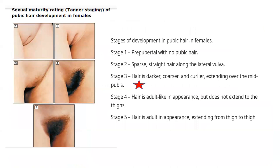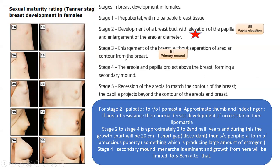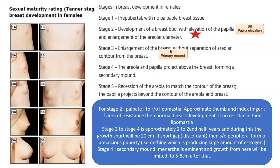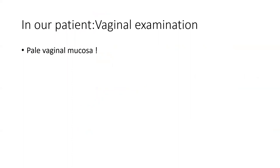For pubic hair development: Stage 1 is prepubertal with no pubic hair. Stage 2 is sparse straight hair along the lateral vulva. Stage 3 is darker, coarser, and curlier hair extending over the mid-pubis — a very important stage. Stage 4 is adult-like hair not extending to the thighs, and Stage 5 is adult hair extending thigh to thigh. Our patient was at P1 but already B3, and since this is present before 8 years, it qualifies as Precocious Puberty.